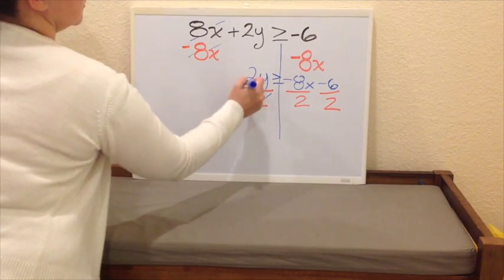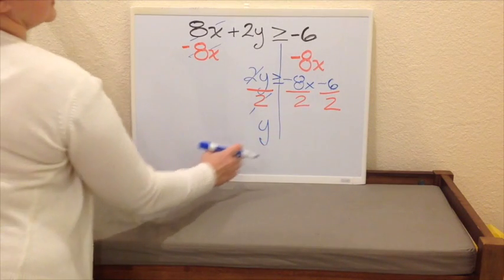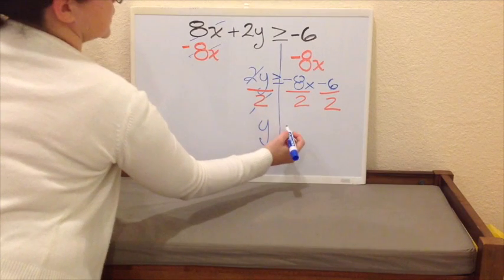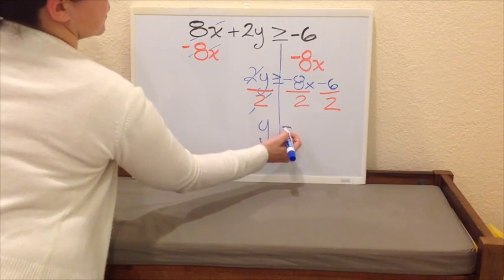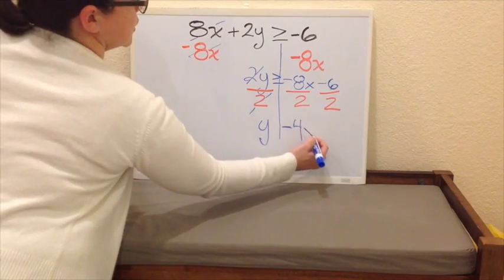So now the 2's cancel. We have our y alone. On the other side, I have negative 8 divided by 2. Again, negative divided by a positive is a negative. 8 divided by 2 is a 4. And x, we just drop.